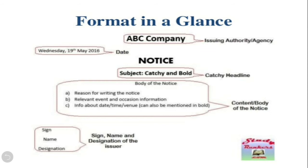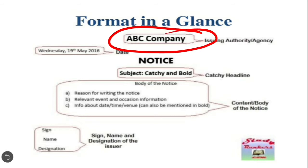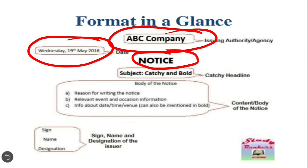Children, this is the format of the notice. First comes the name of the institution, company, or issuing authority. Then comes the date and the day. Then comes the word NOTICE in capital letters. Under that comes a subject or bold heading explaining why the notice is written. Then a single paragraph comprising the reason for writing the notice, relevant event and occasion information, and details about date, time, and venue — this is known as the content or body of the notice. Finally, we end with the signature, name, and designation of the person who has issued the notice.